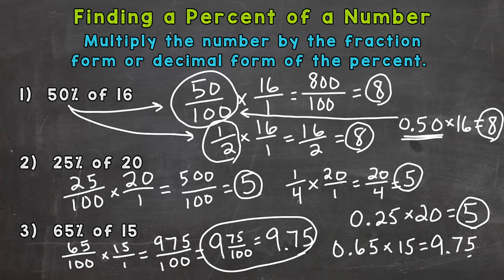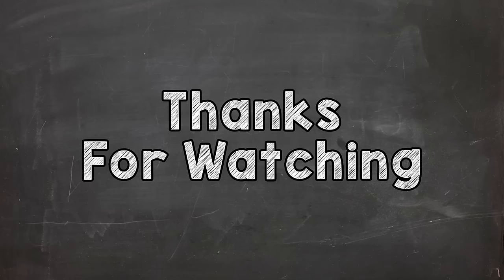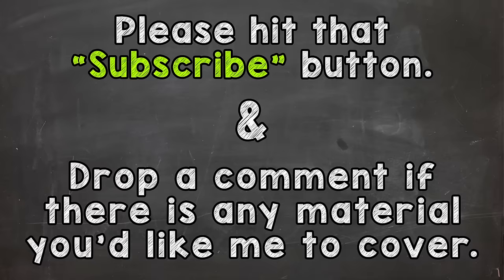So there you have it — that's how you find a percent of a number. Multiply the number you're finding the percent of by the fractional form or decimal form of the percent, and you'll get that percent of the number. Hopefully that helped. Thanks so much for watching — until next time, peace.